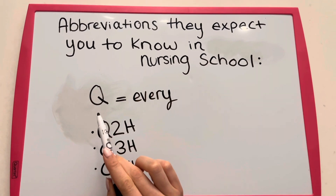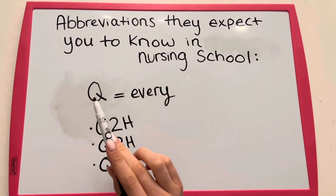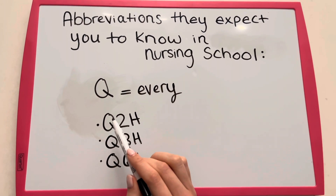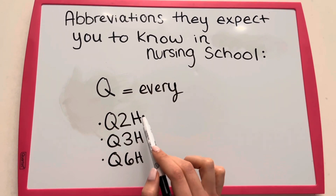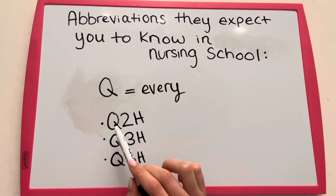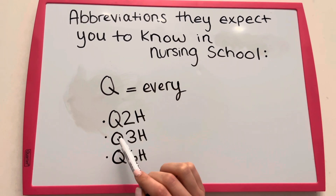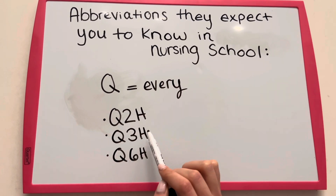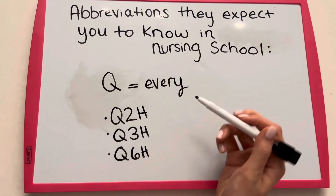Q is used to describe frequency, so Q pretty much equals every. Q2H equals every two hours, Q3H every three hours, and Q6H every six hours.